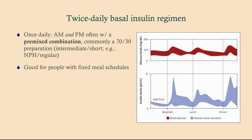The twice-daily insulin regimen uses a pre-mixed combination. Often you'll see 70-30; there's also 75-25 and 50-50, but we usually go with 70-30. What we have here is both NPH and regular. We give this twice a day — we often give it before meals, in the morning before breakfast and at night before dinner, just because it's easier to remember. This is good for people with fixed meal schedules because if you're taking twice-daily and skip lunch, you can become hypoglycemic. This is best for people who have fixed meal schedules, and we'll see why basal-bolus is superior for people who don't.